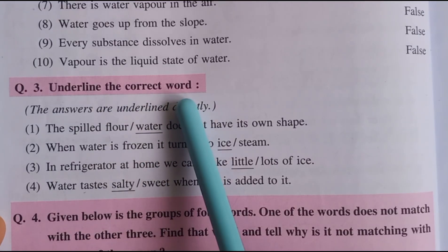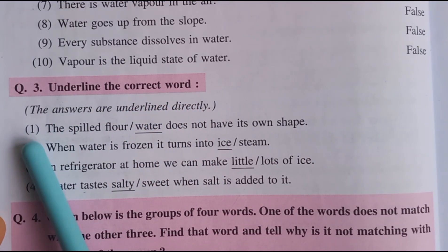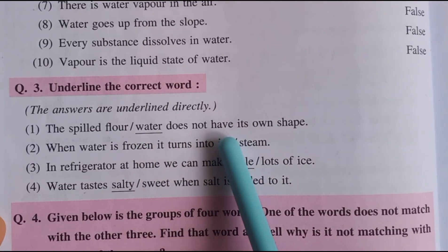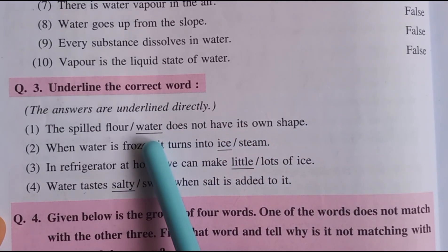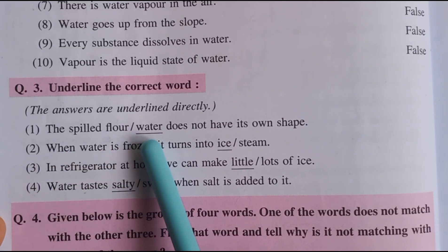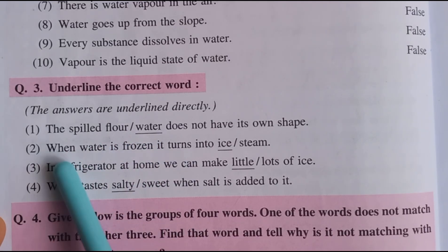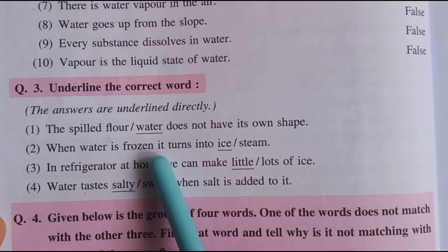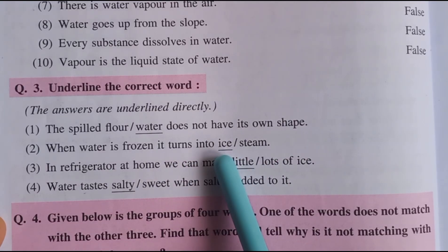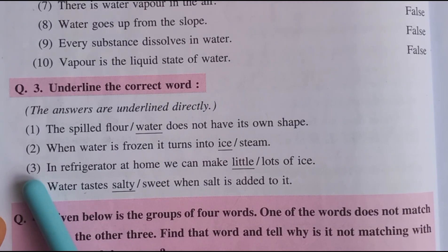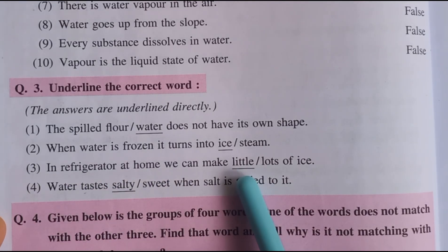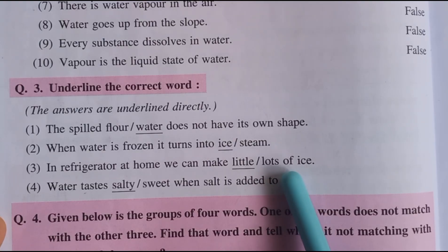Question 3: Underline the correct word. Number 11: The spilled floor or water does not have its own shape. Answer: water. We have to underline water. Number 12: When water is frozen, it turns into ice. Answer: ice. Number 13: In a refrigerator at home, we can make lots of ice.